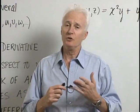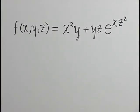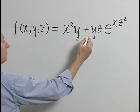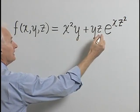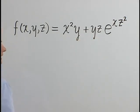Let's do it for practice. We have the function f(x, y, z) = x²y + yze^(xz²), and we're going to compute its partial derivatives.